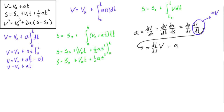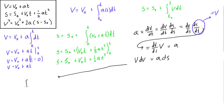Now we do a separation of variables. We have V dV equals A dS. Since A is constant in kinematic problems, we can move it outside the integral sign. We take definite integrals with limits V₀ to V on the left side, and S₀ to S on the right side.